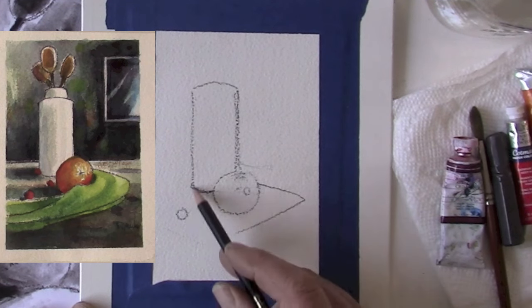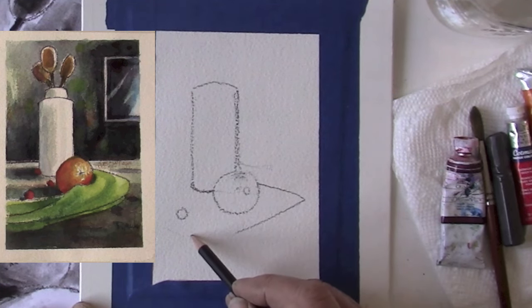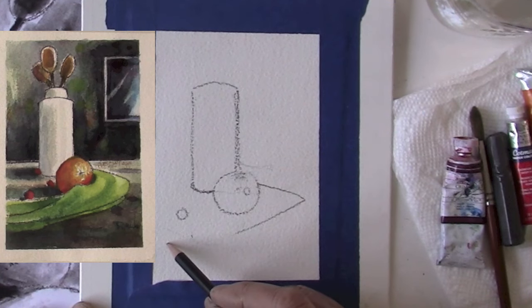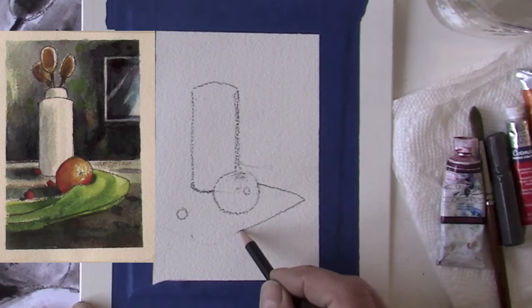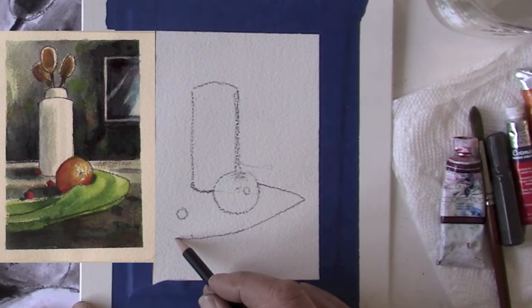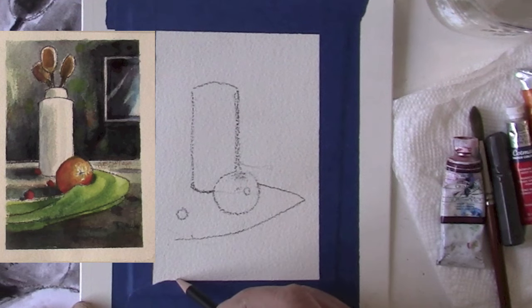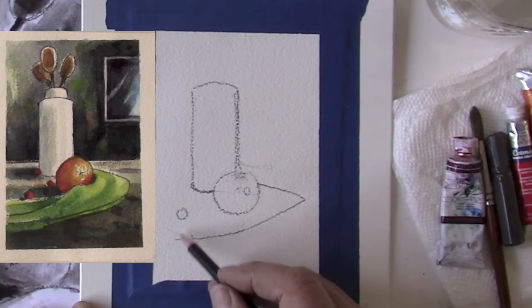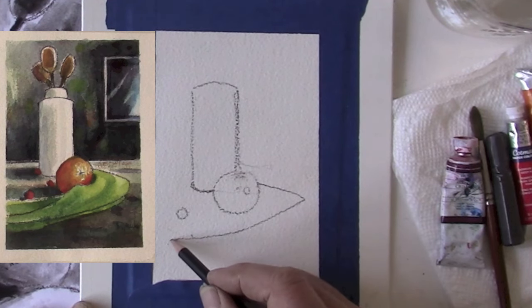This would not be a good place to stop because it's right in the middle of the orange. Now we have the edge of the candle and the little berry, so maybe I'll drop it down right about now.